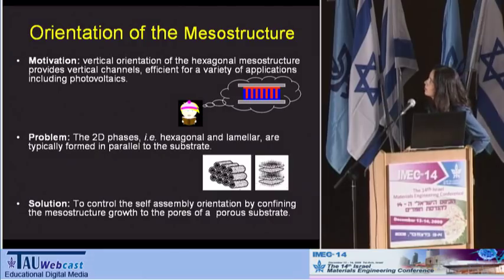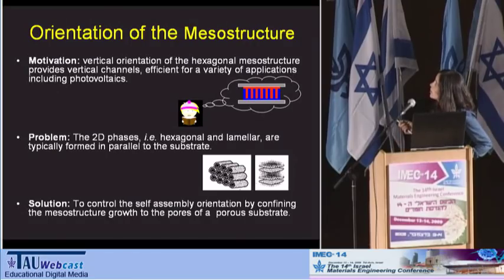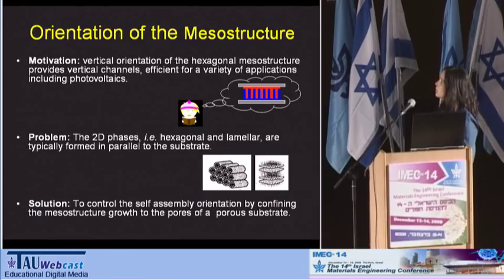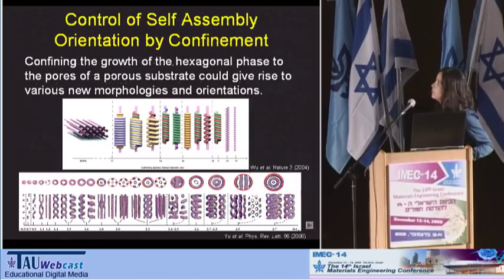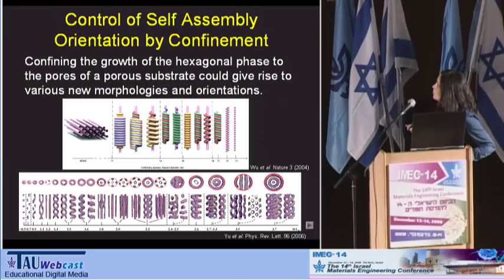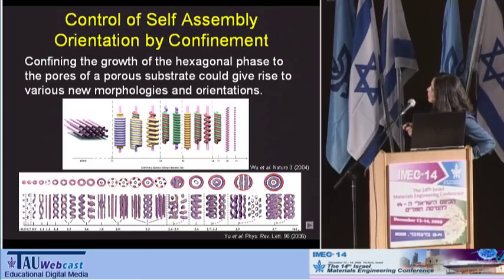Since this is a top-view image, we understand that the cylinders are oriented horizontal to the substrate underneath. Nevertheless, a vertical orientation of such cylinders can be used for a wide variety of applications, among which photovoltaic cells. Previous computer simulations as well as experimental studies have been done on this subject, and you can see that confinement gives rise to a wide variety of phases, including hexagonal phases and also the vertical phase that we would like to induce.